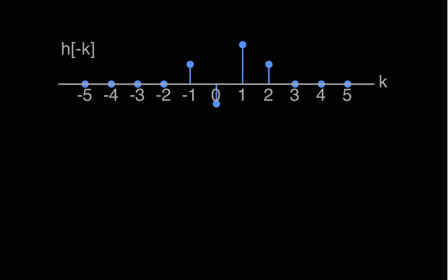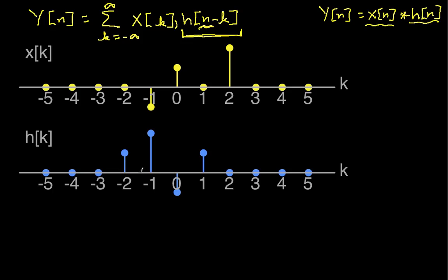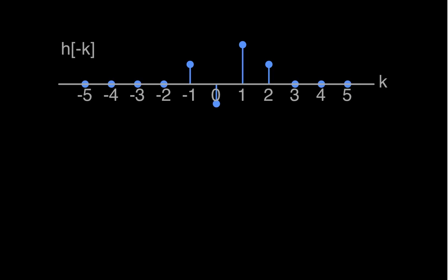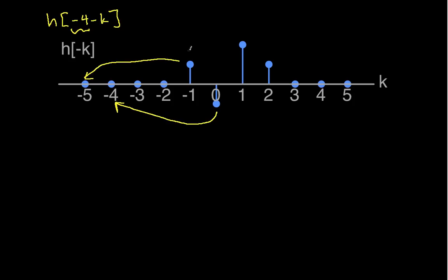We can change the sign of k in h, and this has the effect of flipping h about the sample where k is equal to 0. You can see what it looked like before I flipped it, and now what it looks like when I flip it. If I have h of minus 4 minus k, it takes this flipped signal and shifts it 4 to the left — so this point goes to minus 4, this one to minus 5, this one to minus 3, and this one to minus 2.